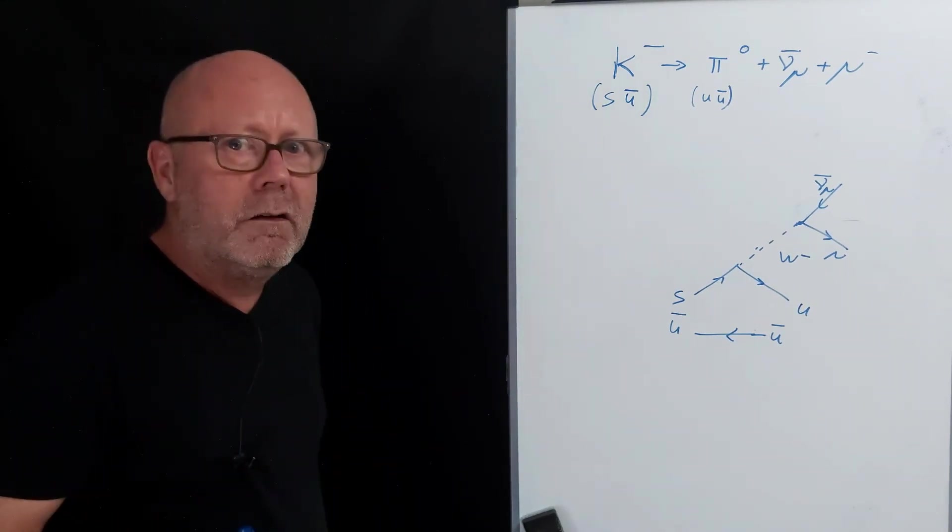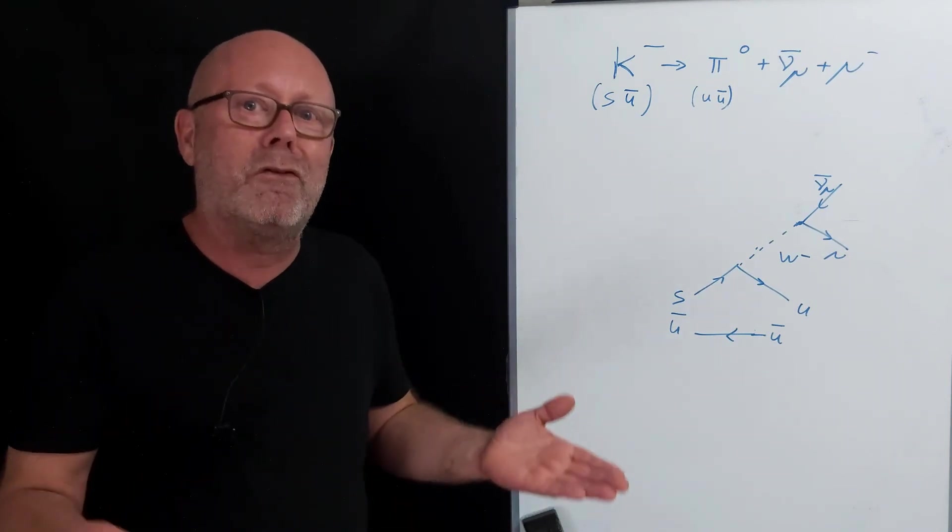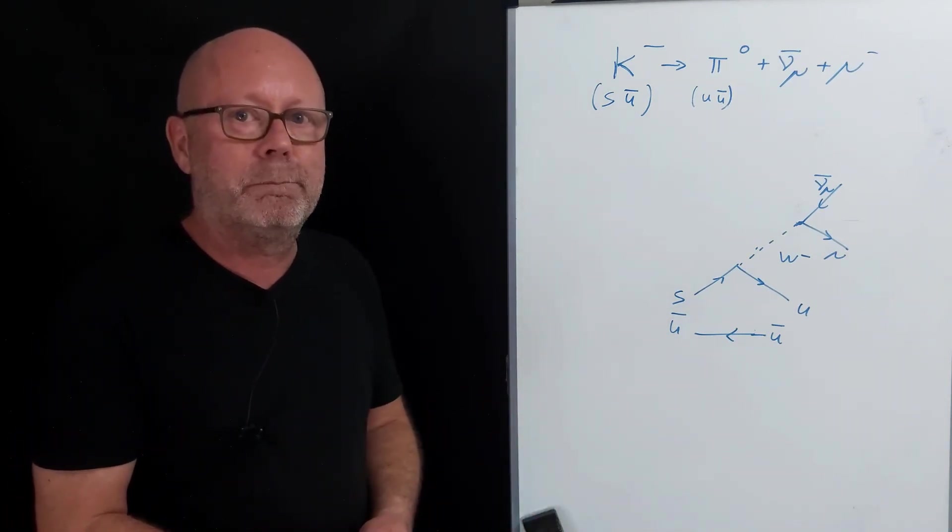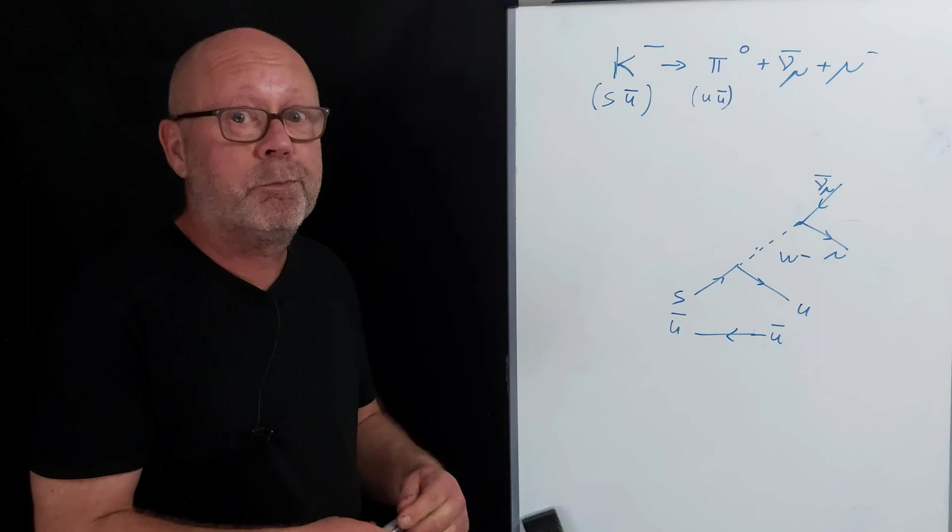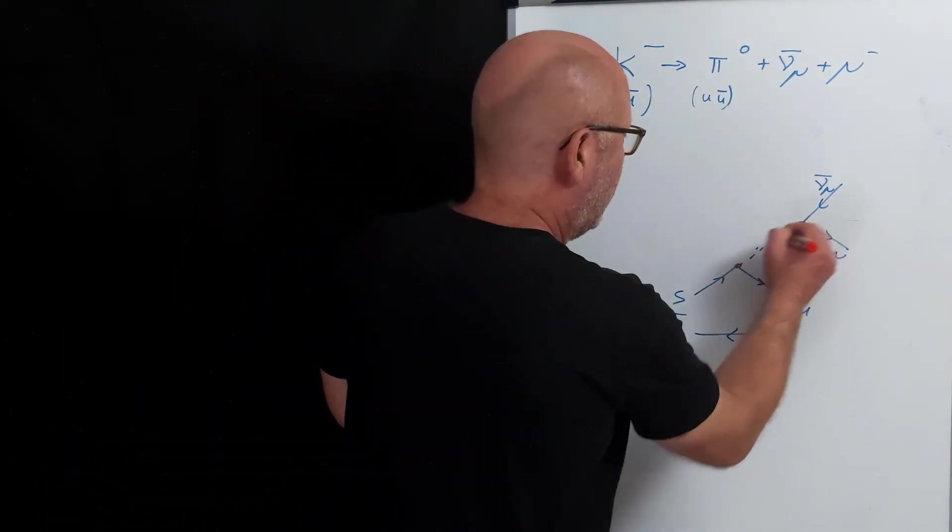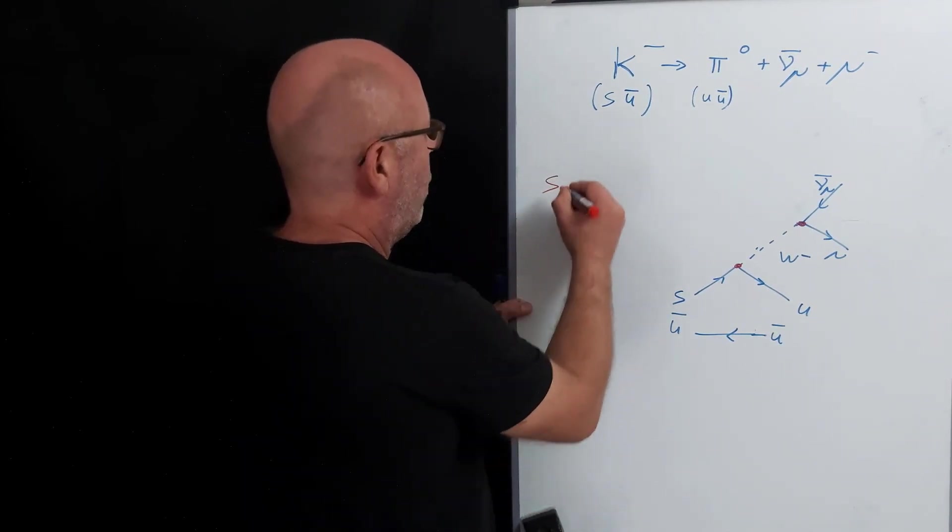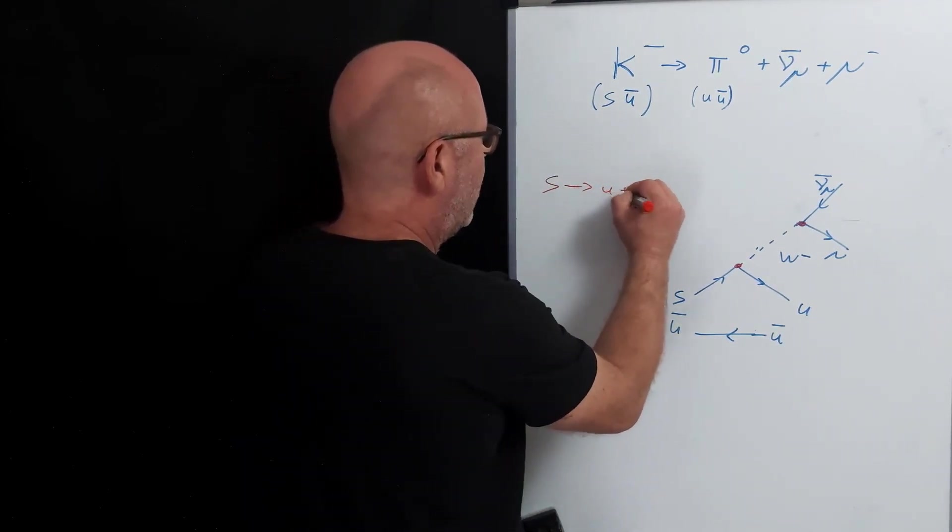Could you check my work? Could you check that this is correct by using the rules of conservation of quantum numbers? Pause the video. So we have two vertices here, one here and one there. Let's check this one. In this one, I have a strange that becomes an up plus a W-.